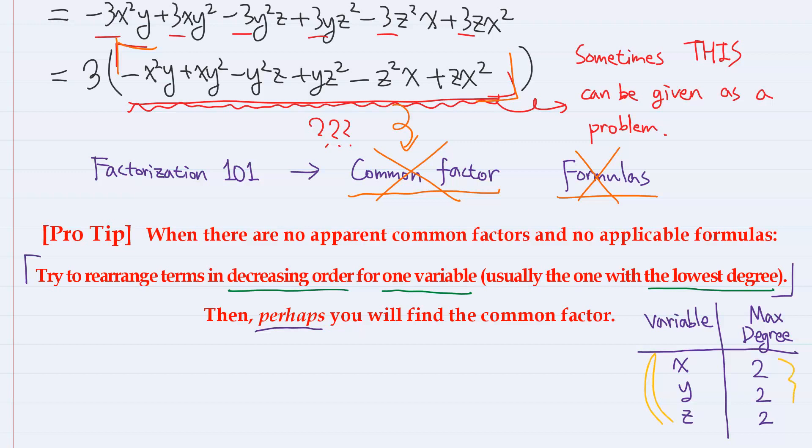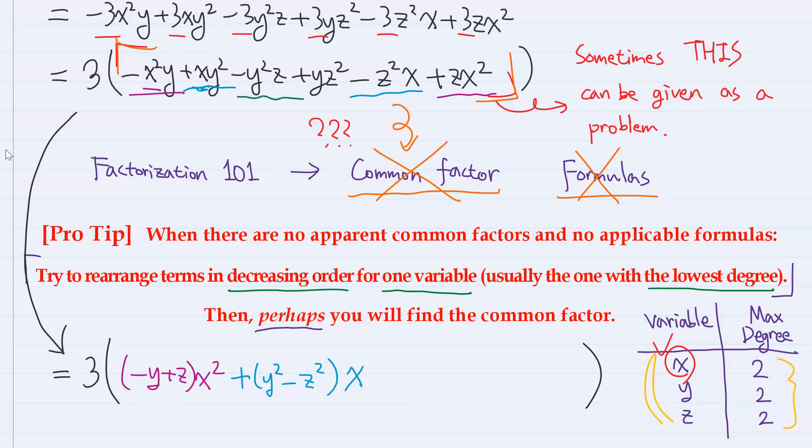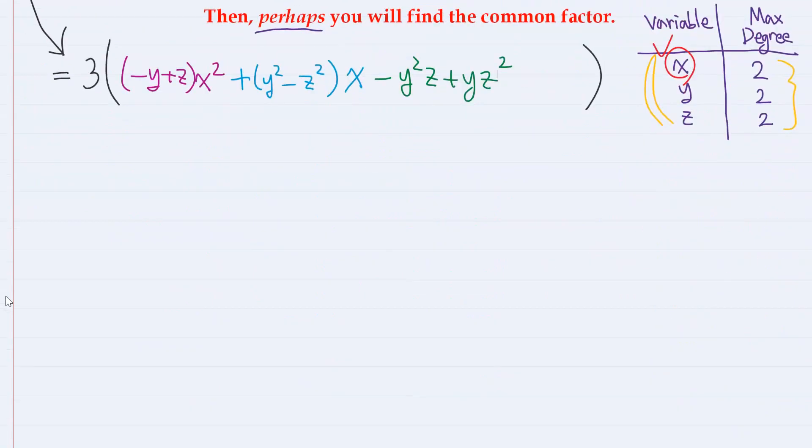In our problem right here, all three variables have the same degree, which is 2. So, let's just arbitrarily pick x and start rearranging in decreasing order of x. First, we have x² terms in here and here. So, we have (-y + z)x². Then, for x terms, we have +xy² here and -z²x here. So, we have +(y² - z²)x. And the remaining terms, which can be considered constant terms from the perspective of x, are -y²z + yz². Now, look what we have here. This part can be written as -(y - z)x². And if we factor this, we have (y + z)(y - z)x. And for this part, yz is common, so we can write -yz(y - z).